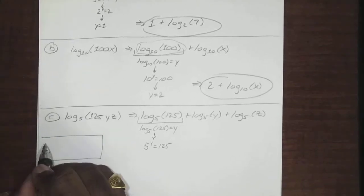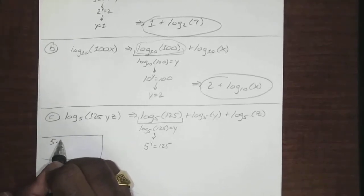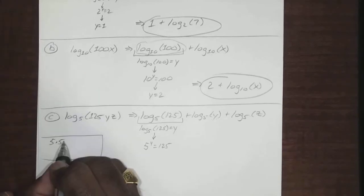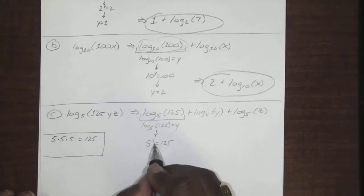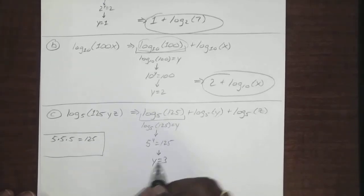Okay, so we know that 5 times 5 is, well it's 25, and 25 times 5 is 125. So that means for this to be true, y would have to equal 3.